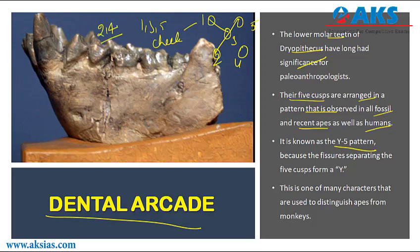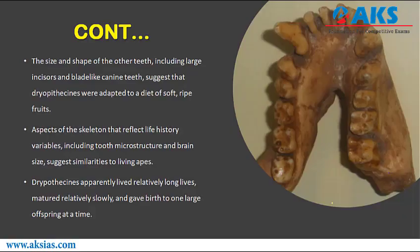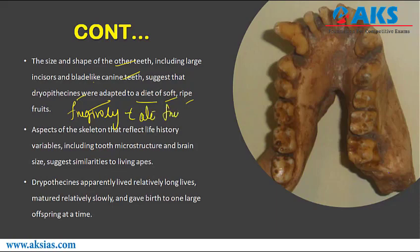This is called the Y-5 cusp pattern. The dental arcade is arranged as ICPM — incisors, canines, premolars, and molars. The Y-5 pattern is so named because a fissure separating the five cusps forms a Y shape. This is one of the main characteristics used to distinguish apes from monkeys. The size and shape of the other teeth, including large incisors and blade-like canine teeth, suggest that Dryopithecus were adapted to a diet of soft and ripe fruits, making them frugivores.